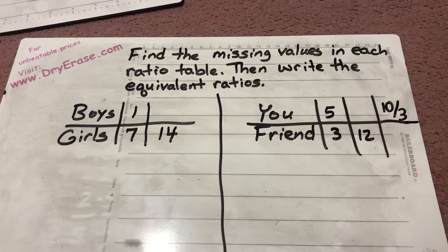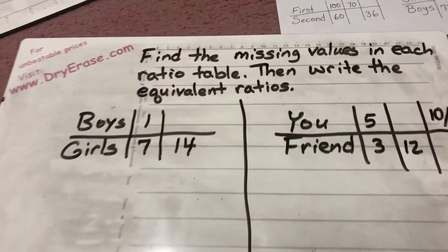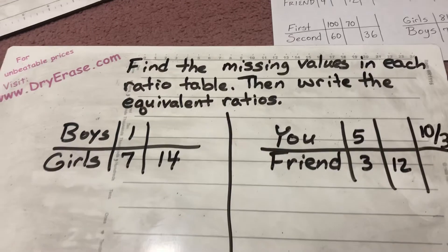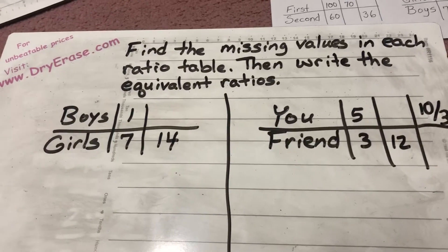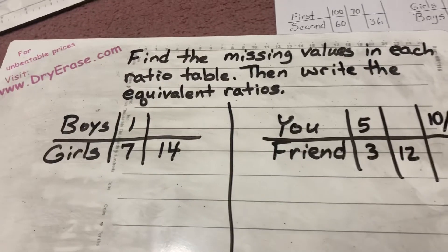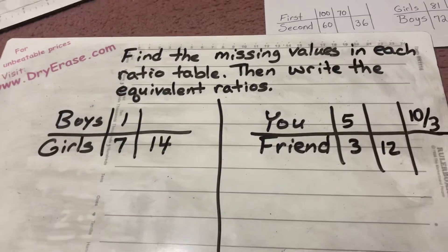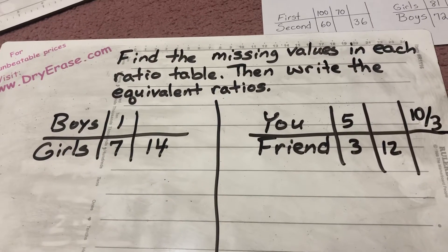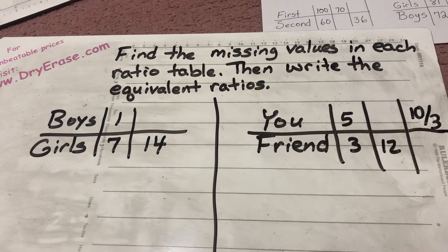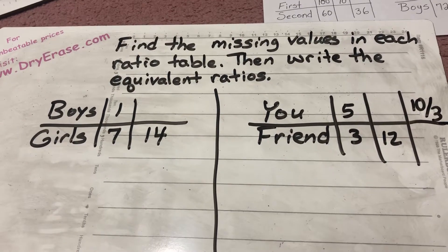Find the missing values in each ratio table, then write the equivalent ratios. So what exactly does that mean? Find the missing values in each ratio table, then write the equivalent ratios.